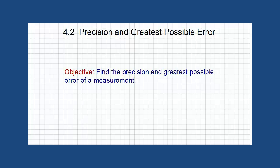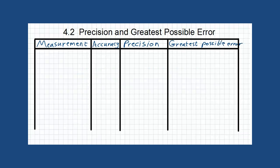Watch these examples now. In this table, we will show some examples of how to find the precision and the greatest possible error for a measurement. We also learned in the past lesson how to find the accuracy, so let us review that with these examples.